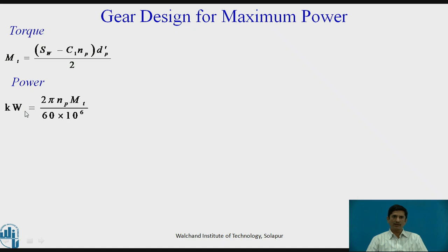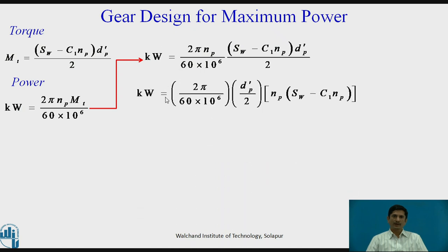Torque we have obtained. Then power in kilowatt equals 2 pi NP MT upon 60 into 10 to the power 6. Here I need to put the value of torque. If I put this value of torque, the equation of power is obtained. I am going to simplify this equation. I am taking out the terms which can be represented as constant, rearranging the terms for NP.